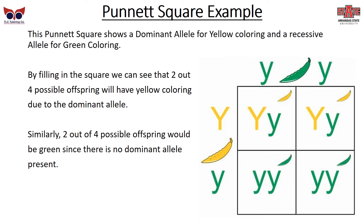Here is a Punnett square for a yellow pea plant and a green pea plant. The capital letter Y represents the dominant allele for yellow coloring, and the recessive allele is for green. One parent is yellow because they carry the dominant allele, while the green plant has two recessive alleles. You fill in the square by pairing the combinations you see. Statistically, two of the offspring should have yellow coloring due to the dominant allele, and two should be green since no dominant allele is present — so with four offspring, we'd expect two yellow and two green.